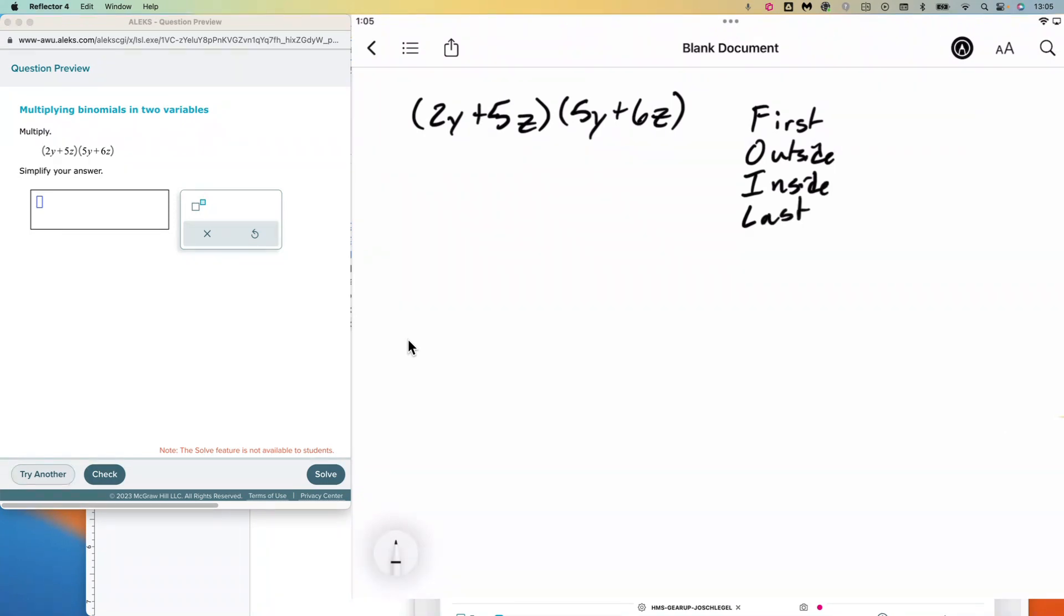That will work when you have a binomial times a binomial, but that doesn't work as soon as you add something else to the end, like a minus 3k or something. Because now there are not just first, outside, inside, last—there are three things on the right, not just two.